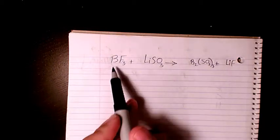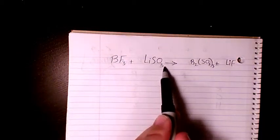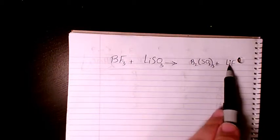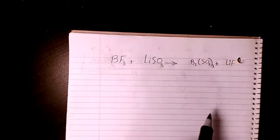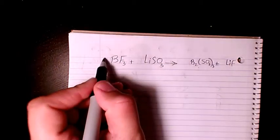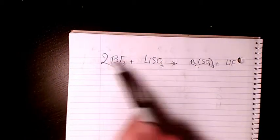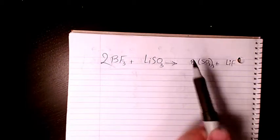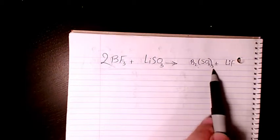We have BF3 plus Li SO3 gives B2(SO3)3 plus LiF. I start with lithium. Lithium, we have one here and one here, so it's balanced. What about boron? We have one here and we have two here, so I need to put two. Now it's balanced from both sides. We have two of them here and two of them here. What about SO3? SO3 on the product side?